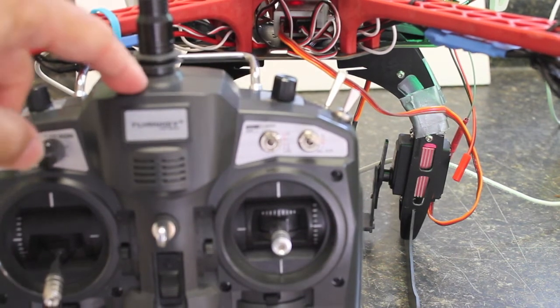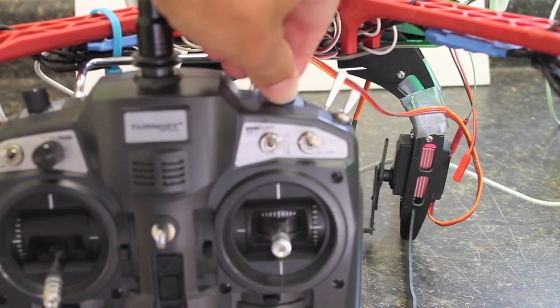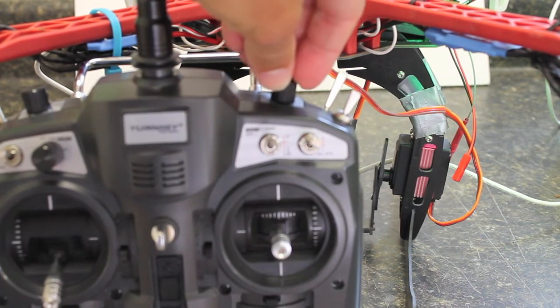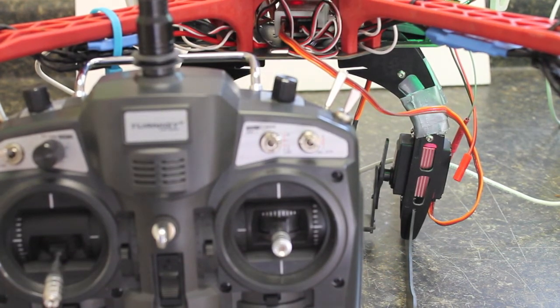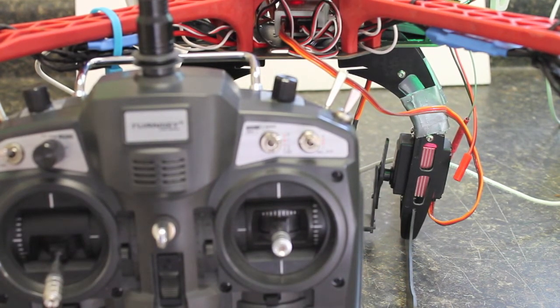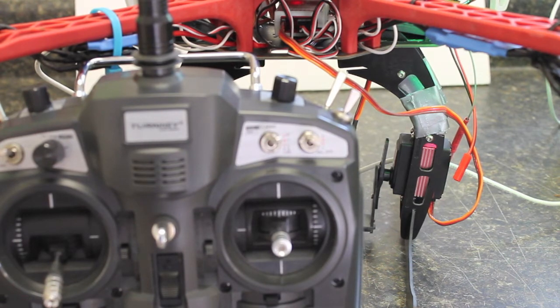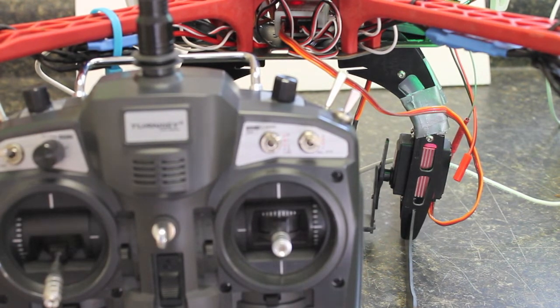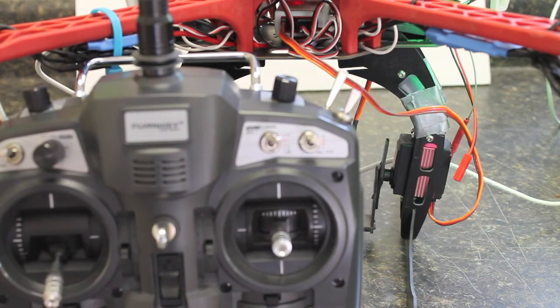This is the Turnigy G9X and I've configured the channel to work with this control knob. I won't go into details about how that's done, but if you have any questions related to setting that up, feel free to post a comment or drop me a note.